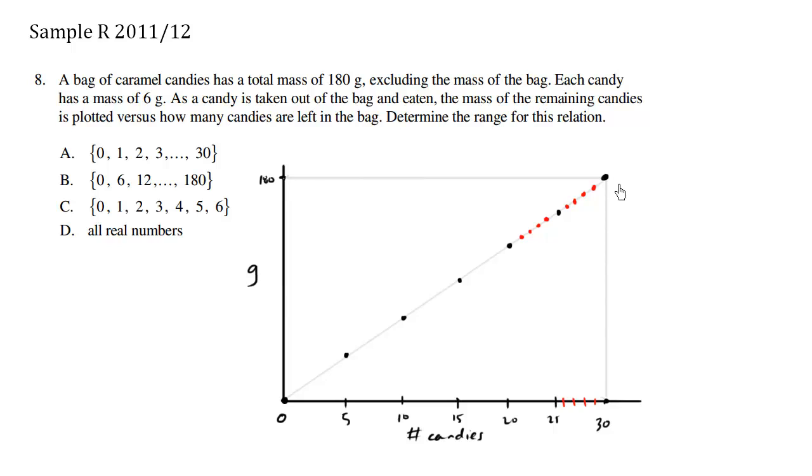So as we go from 30 bags to 29 bags, we're going to lose 6 grams. And then that's going to be 6 grams subtracted away from 180. 180 minus 6 is going to be 174 grams, and it's going to keep subtracting 6 grams.